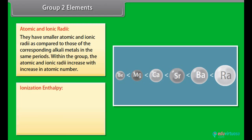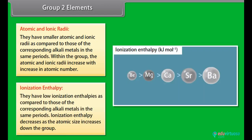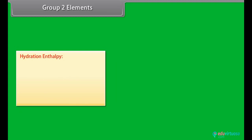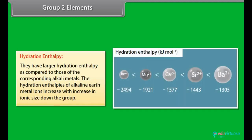Ionization enthalpy: They have low ionization enthalpy as compared to those of the corresponding alkali metals in the same periods. Ionization enthalpy decreases as the atomic size increases down the group.